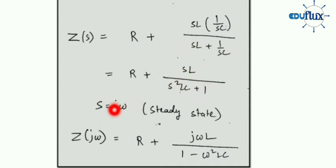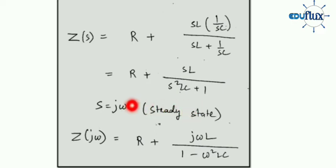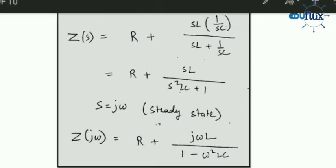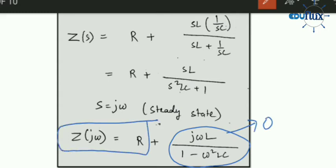For steady state, S equals jω. Substituting, Z(jω) equals R plus jωL divided by (1 − ω²LC). Now, the imaginary part of Z is ωL divided by (1 − ω²LC). If I equate this to zero, I get the circuit as purely resistive. This will become zero either when ω equals zero (DC) or when ω tends to infinity.